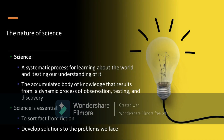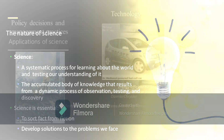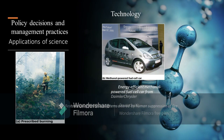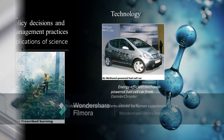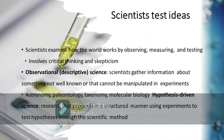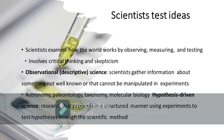Now let's talk about the nature of science. Science is defined as a systematic process for learning about the world and testing our understanding of it. It is also defined as the accumulated body of knowledge that results from a dynamic process of observation, testing, and discovery. Science is essential to sort fact from fiction, develop solutions to problems we face, and inform policy decisions and management practices. The application of science is what we refer to as technology. Scientists examine how the world works by observing, measuring, and testing. This involves critical thinking and skepticism.